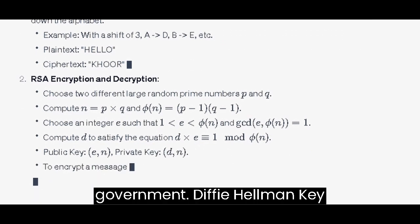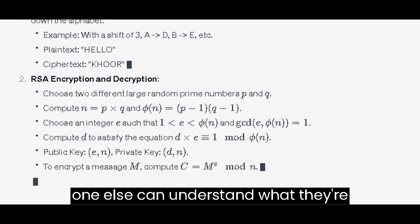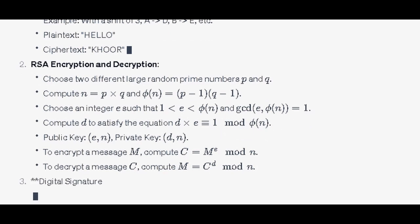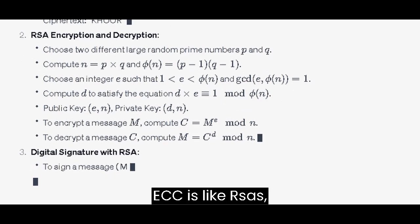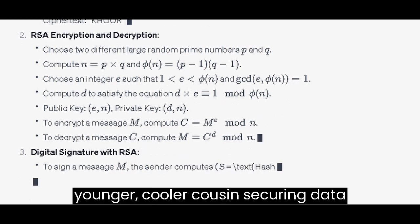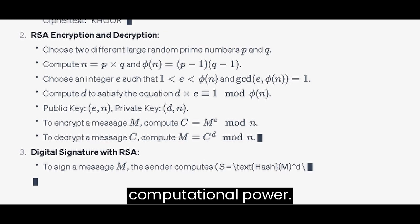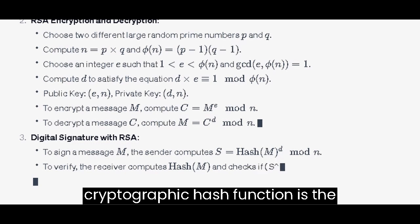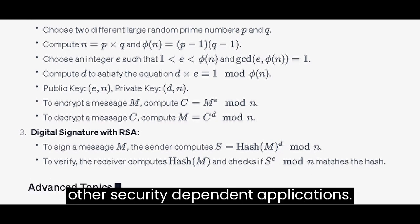Diffie-Hellman Key Exchange: imagine two people swapping secret notes in a crowded room, yet no one else can understand what they're saying — that's what Diffie-Hellman achieves in the digital world. Elliptic Curve Cryptography (ECC): ECC is like RSA's younger, cooler cousin, securing data using shorter keys and taking up less computational power. SHA-256: this cryptographic hash function is the backbone of blockchain technology and other security-dependent applications.